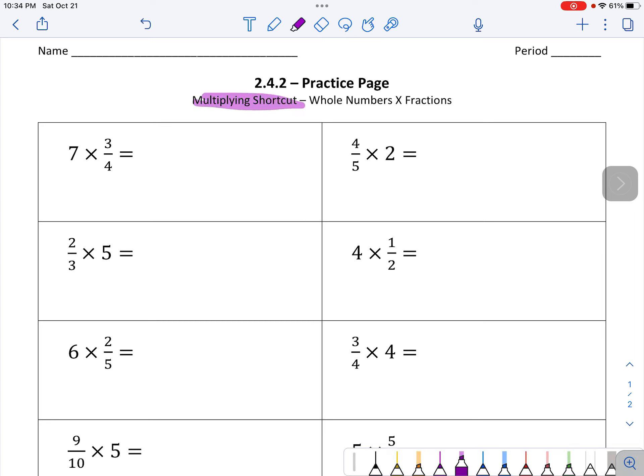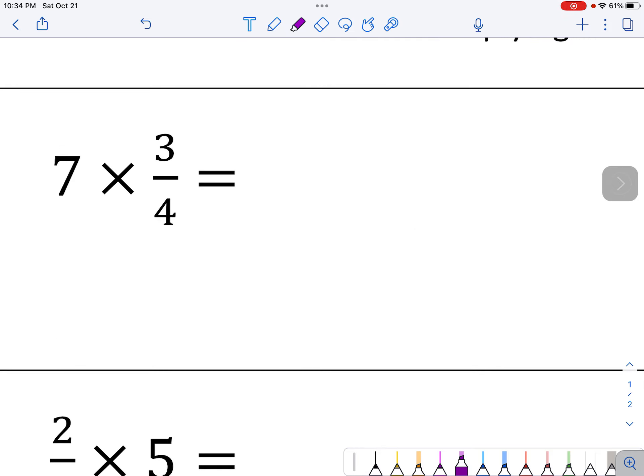We're working on the multiplication shortcut. But I'm throwing a curveball at you here, because we are using whole numbers times fractions. So you might remember that we could multiply across when it's a fraction times a fraction. In this case, you can't multiply across.